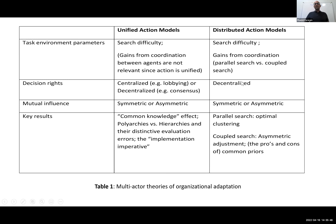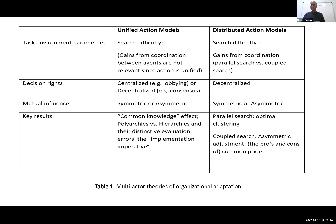Let me start by reminding you of something from last time. When you go from individual to multi-actor learning, there are two broad ways to do it. You can think about multiple actors who take a single action in aggregate — a unified action model. An example would be a committee. Henning's paper is an example of that: multiple actors, but collectively they take one action.